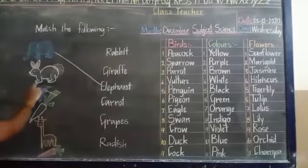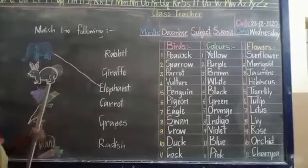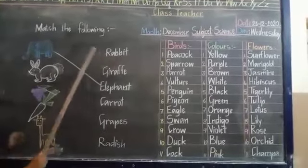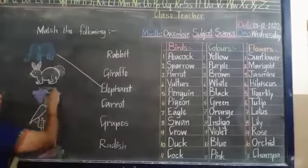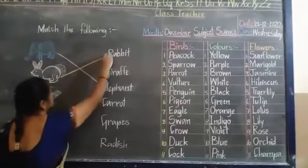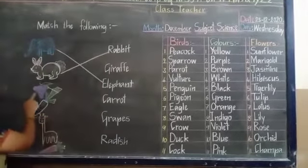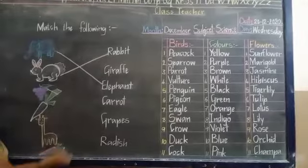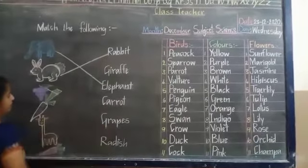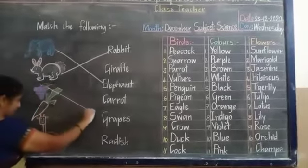Then rabbit. Rabbit spelling is R-A-B-B-I-T. Rabbit. Let us match the picture with the spelling. And next comes grapes. G-R-A-P-E-S. Grapes.